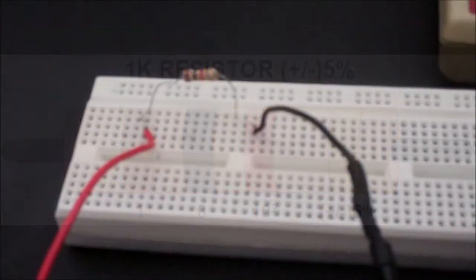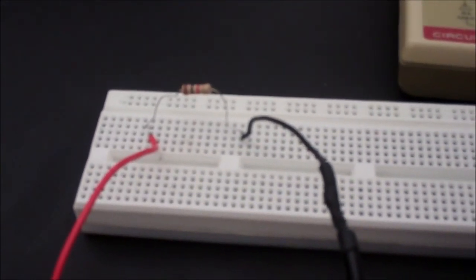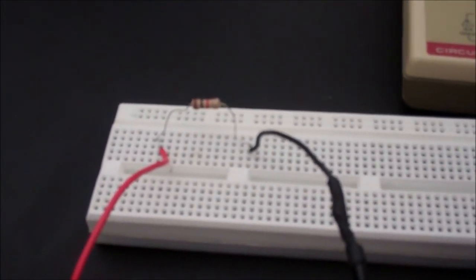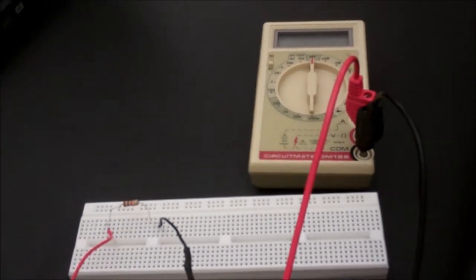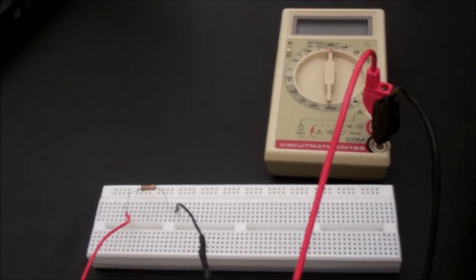When you need to know the actual experimental resistance of a resistor, the bands will get you close, but not quite exact. The best way to get the exact resistance is to plug your resistor into your breadboard and use a multimeter to measure the resistance.